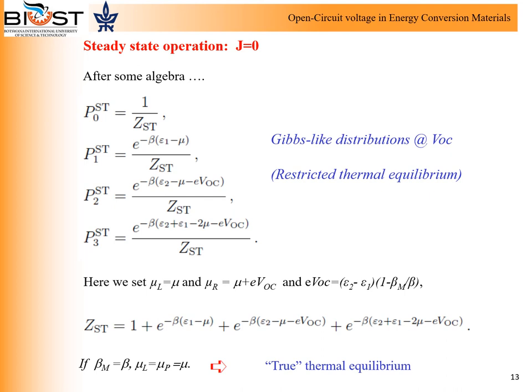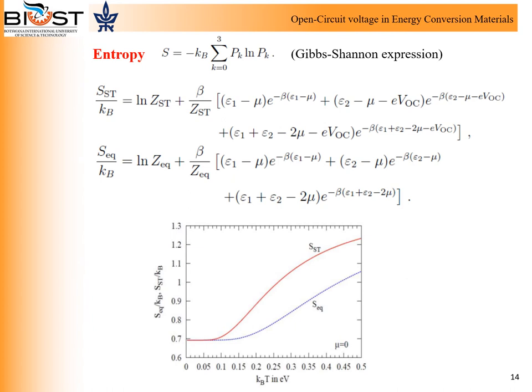As we can see, the restricted thermal equilibrium population probability is parameterized by the open-circuit voltage, which enters as a new parameter compared to the true thermal equilibrium configuration. Based on this result, it is possible to calculate thermodynamic properties of the underlying system using traditional methods. For example, we are able to calculate the Gibbs entropy for both the constrained and the true thermal equilibrium. The figure below shows both the constrained equilibrium entropy and the true equilibrium entropy as a function of temperature. In the low-temperature limit, the entropy expressions fall together and approach ln 2. In addition, the entropy of the open-circuit configuration is always larger than the entropy of the true equilibrium configuration.